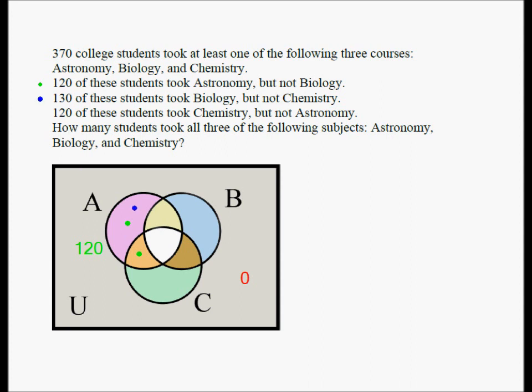Let's work on our second statement. 130 students took biology but not chemistry. Look at this crescent. This crescent within B represents the number of students or the students who took biology but not chemistry, and according to the question, that is 130.